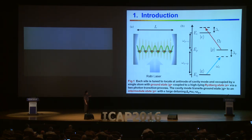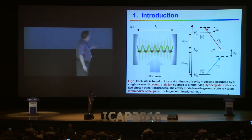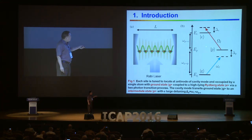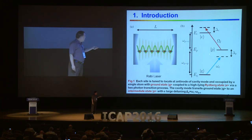Now we discuss our system. Our system: firstly we want to consider the cavity. This cavity frequency is ω_c, which traps atoms in a lattice inside the cavity. The lattice means we can find the Rydberg solid. Lastly, we want to trap the atoms — the Rydberg atoms.